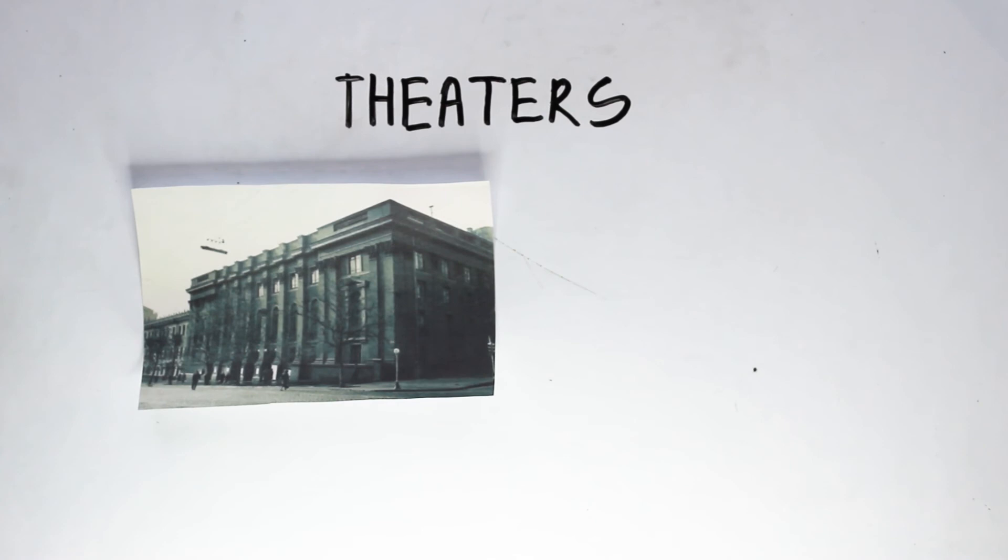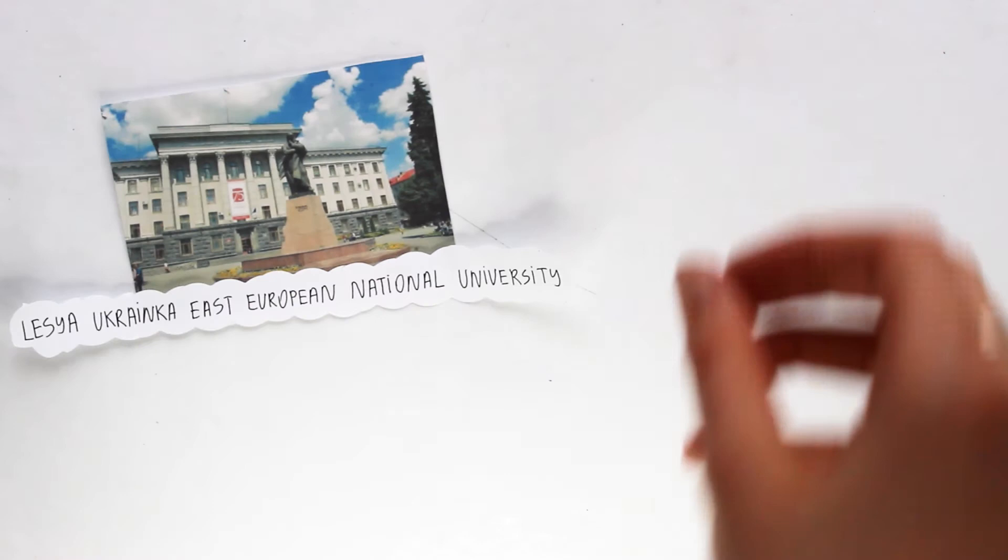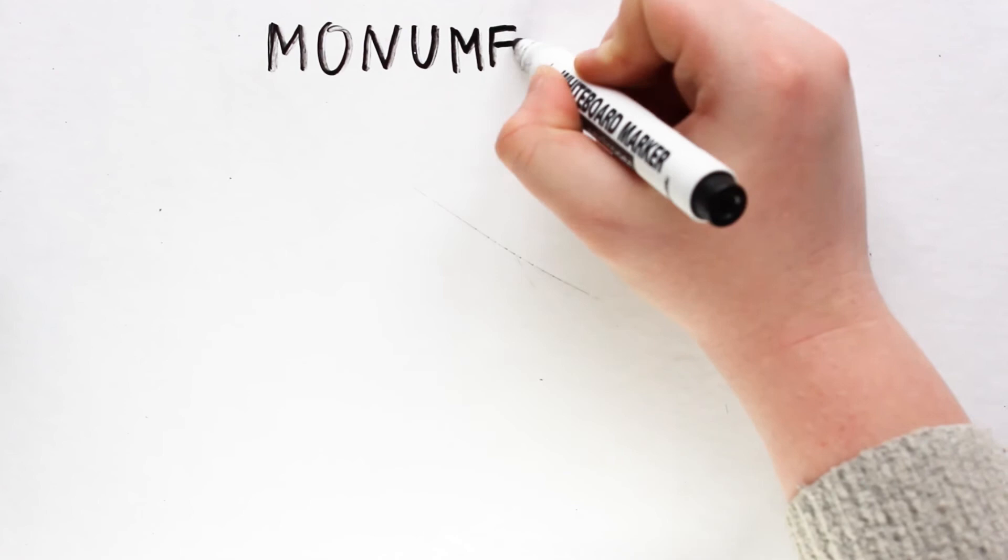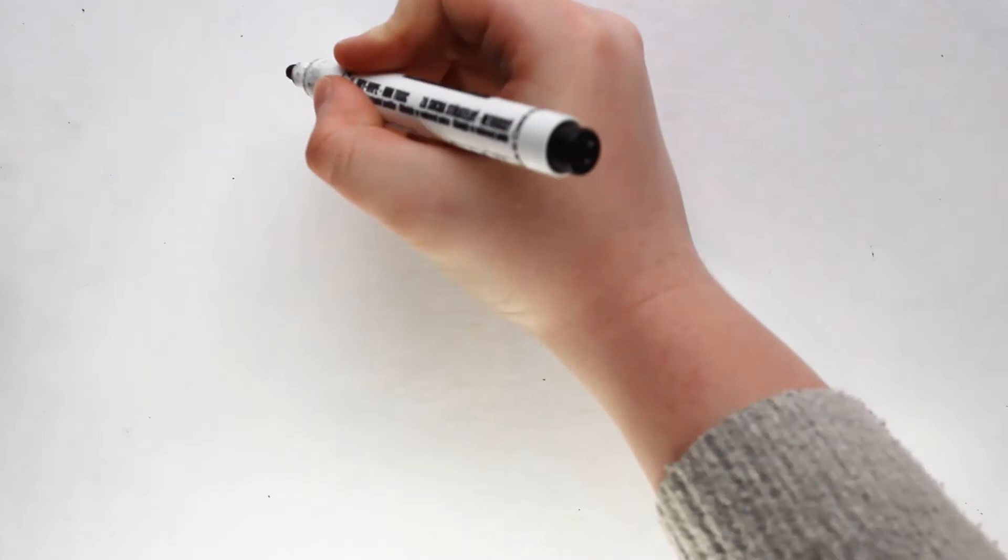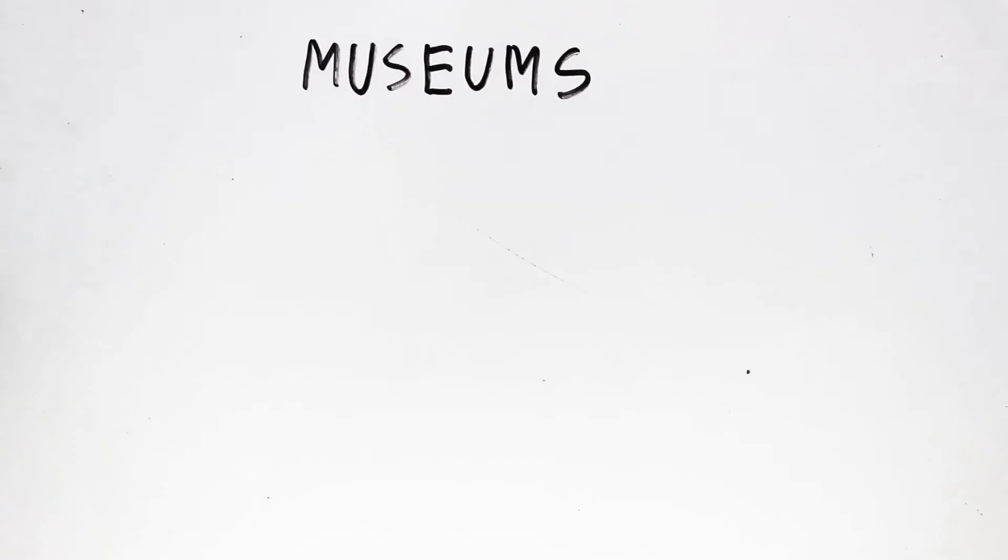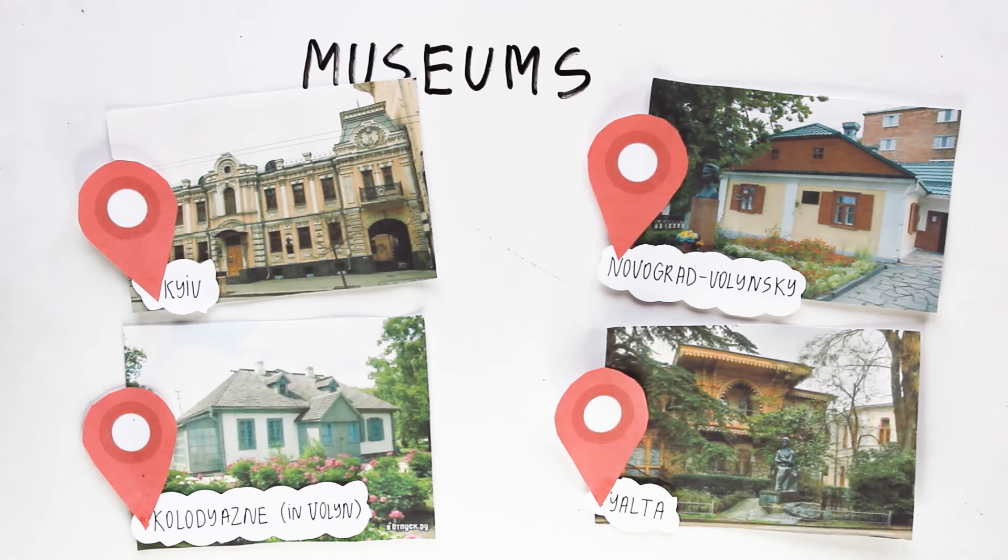Lesya Theaters are located in Kyiv and Kamenske. There is also a university named after her in Lutsk and the Palace of Culture in Odesa. In addition to numerous monuments located in Ukraine, there are also some in Toronto, Canada, Moscow, Russia and Tel Aviv, Georgia. Museums dedicated to her work in Kyiv, Novohrad-Volynskyi, Kolodyazne in Volyn, Yalta, as well as in the city of Surami, Georgia.